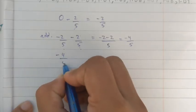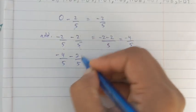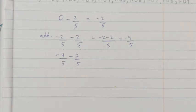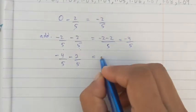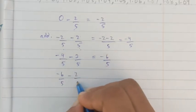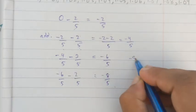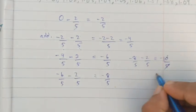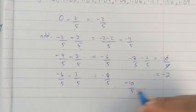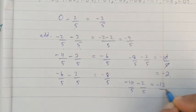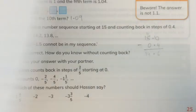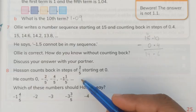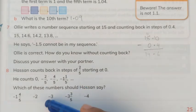Continuing, minus 4/5 minus 2/5 equals minus 6/5. Then minus 6/5 minus 2/5 equals minus 8/5. Then minus 8/5 minus 2/5 equals minus 10/5, which simplifies to minus 2. Then minus 10/5 minus 2/5 equals minus 12/5. The negative numbers keep increasing. The sequence so far is: 0, −2/5, −4/5, −6/5, −8/5, −10/5, −12/5...